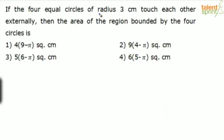If four equal circles of radius 3 centimeters each touch each other externally, then find the area of the region bounded by the four circles. You have the answer options, so try and draw these four circles. Equal circles of radius 3 centimeters means each circle has a radius of 3 centimeters. They touch each other externally.